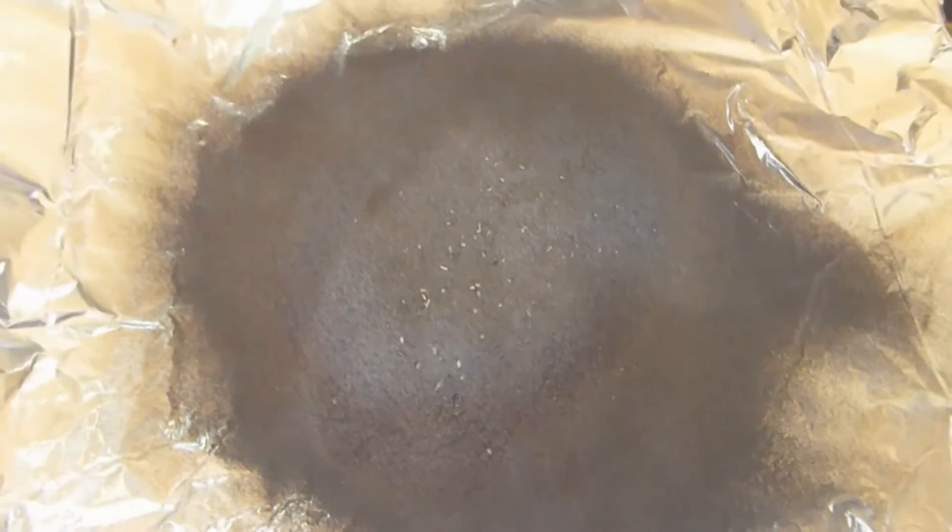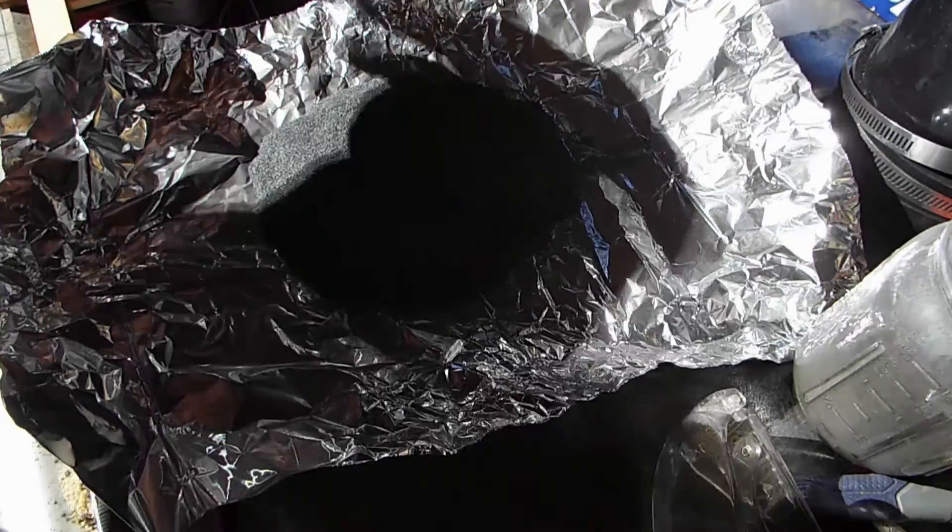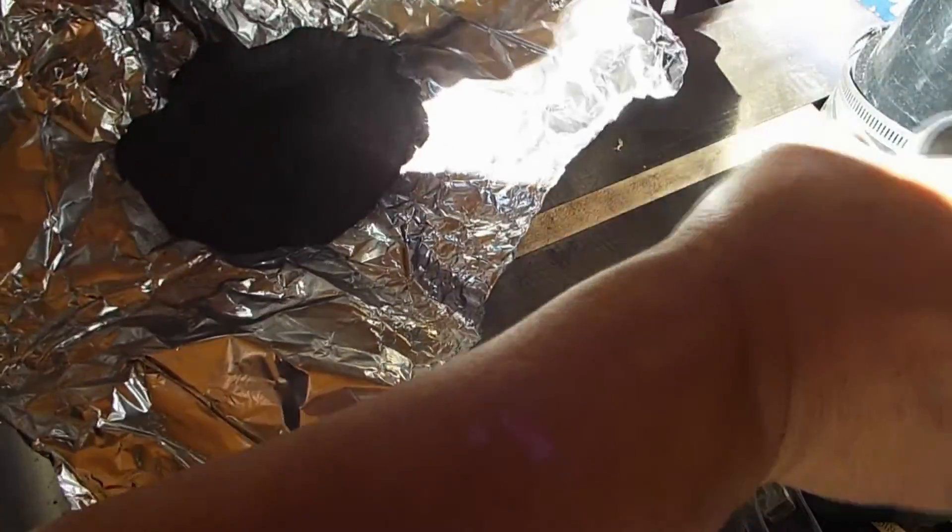So the next step is going to be to classify it down to 500 mesh aluminum and then put the remainder back into the mill and let it process some more. Alright, so we're going to dump this into a mason jar so that we can classify it.